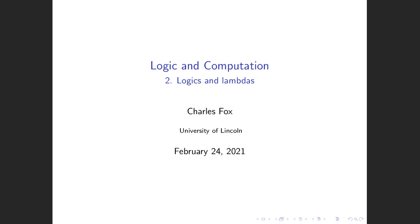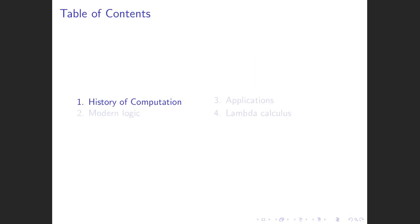I'm going to continue our discussion of the history of some of these things. We did some of the history of logic last week. I want to go through the history more on the computational side, and then we'll talk about where this has all ended up in modern logic and in applications in modern computation — the practical applications of all of this in computer science.